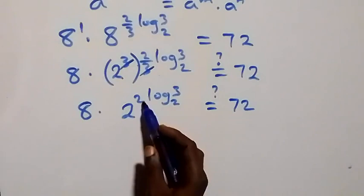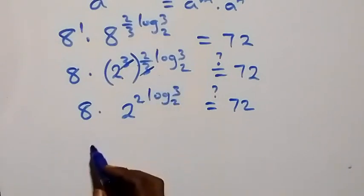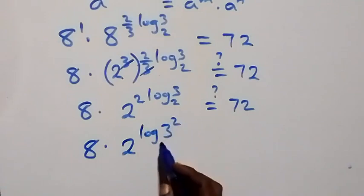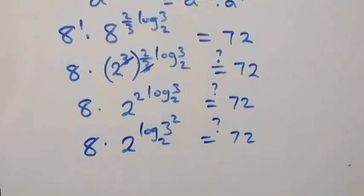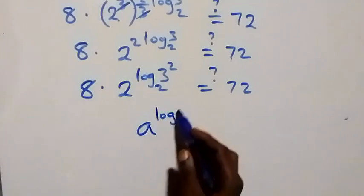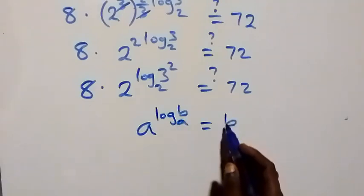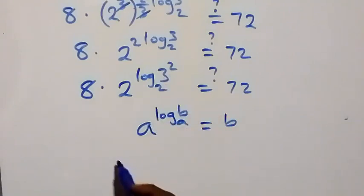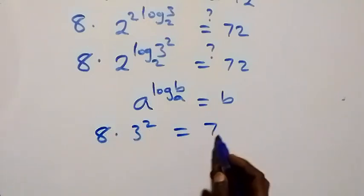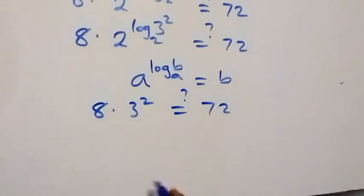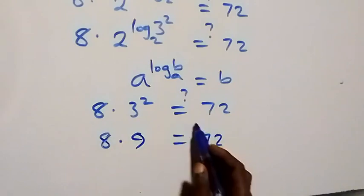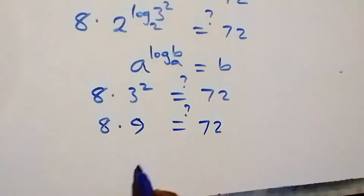We move the 2 inside using the power law, giving 8 times 2 raised to power log(3 squared) to base 2, which equals 72. Applying the logarithm identity a raised to power log_a(b) equals b, we get 3 squared, which is 9. So we have 8 times 9 equals 72, and 8 times 9 is indeed 72.